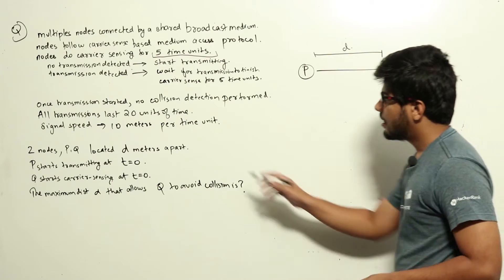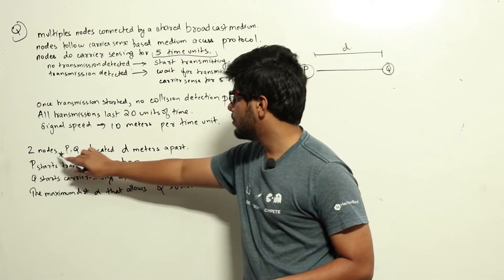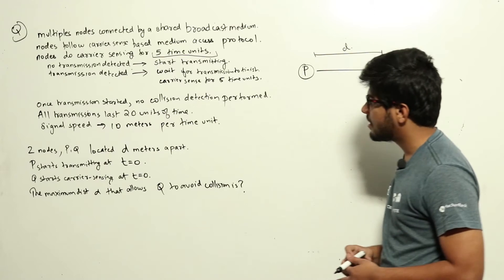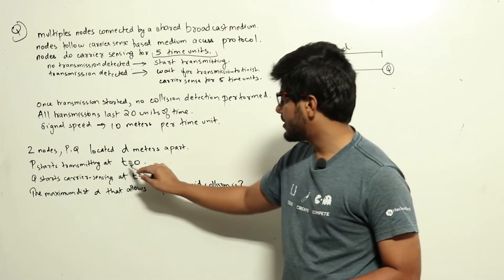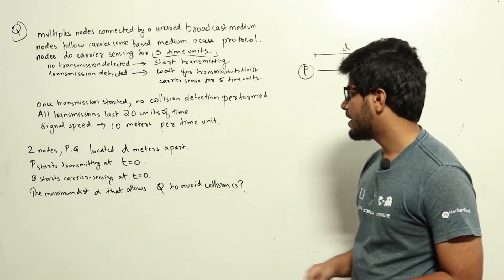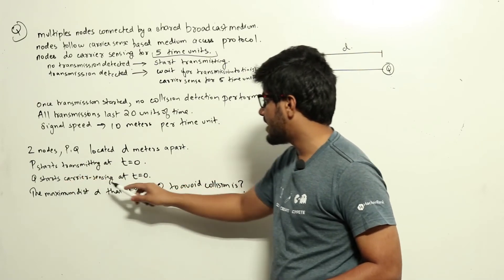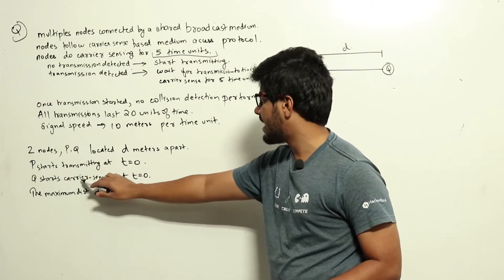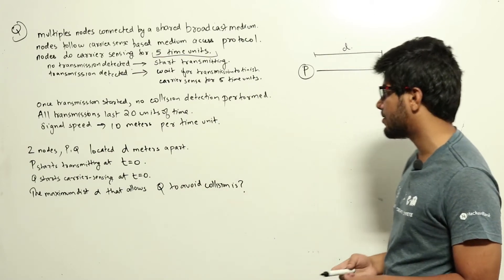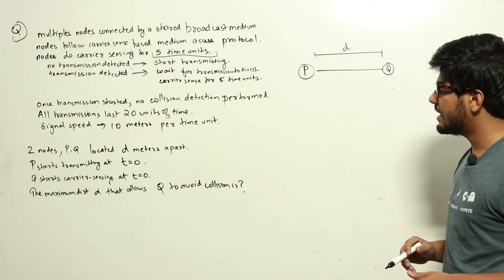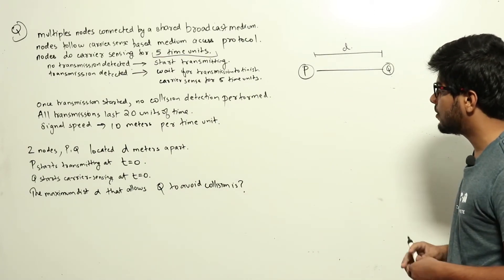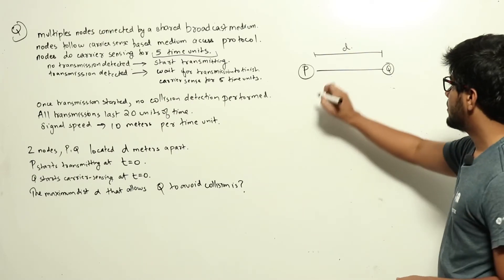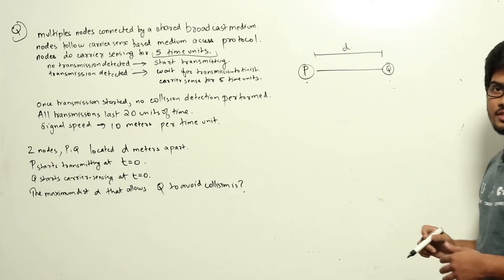In the question, two nodes P and Q are located D meters apart. P starts transmitting at time t=0, and Q receives a packet to transmit at time t=0, so Q will start its carrier sensing phase at t=0. The question asks for the minimum distance D that allows Q to avoid collision.